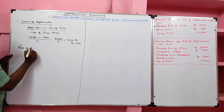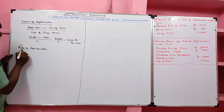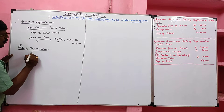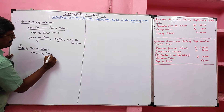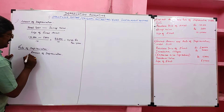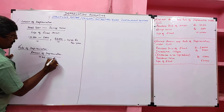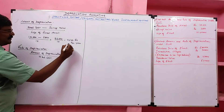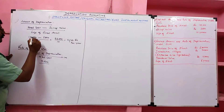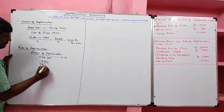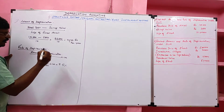The rate of depreciation means the percentage of depreciation. The formula is: Amount of Depreciation divided by Total Cost or Original Cost, multiplied by 100. The amount of depreciation is 9,500 and the total cost is 1 lakh, so the rate of depreciation is 9.5 percent.